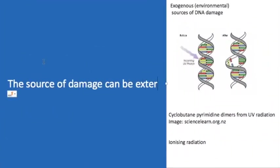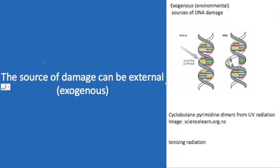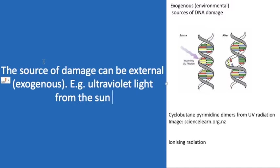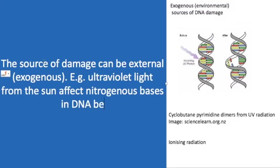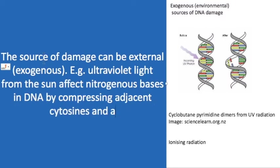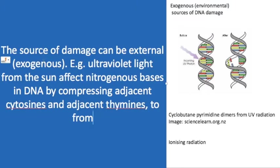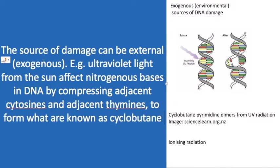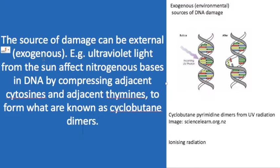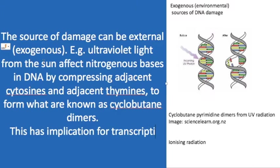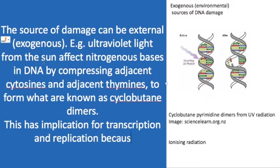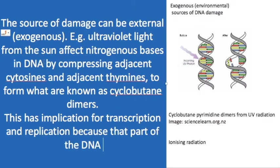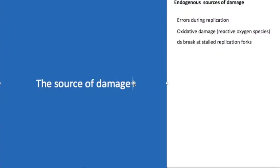The source of damage can be external. For example, ultraviolet light from the sun can affect nitrogenous bases in DNA by compressing adjacent cytosines and adjacent thymines to form what are known as cyclobutane dimers. This has consequences for transcription and replication when you have adjacent bases that are compressed.